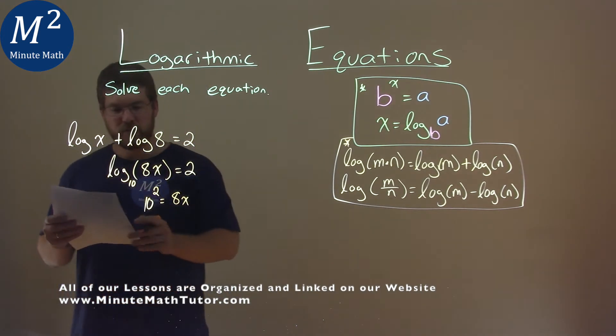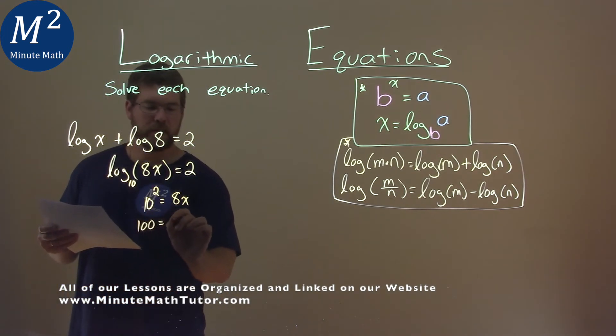Well, 10 squared is 100. So 100 equals 8x. Divide both sides by 8.